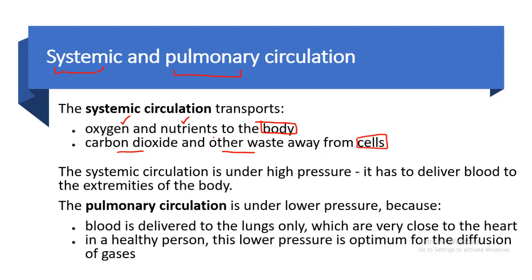In systemic circulation, oxygen and nutrients are carried by the arteries to the body, and waste is carried by the veins back to the heart. Systemic circulation is under high pressure, because it has to deliver blood to the extremities of the body.